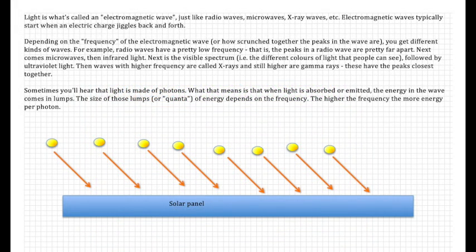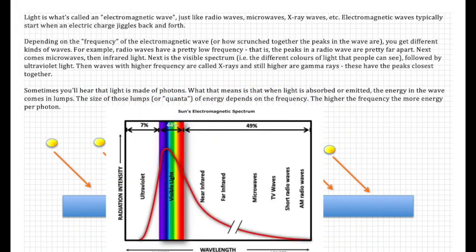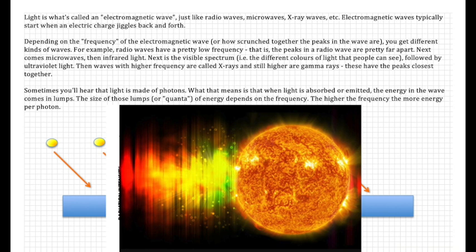Light is what is called an electromagnetic wave, just like radio waves, microwaves, x-ray waves. Electromagnetic waves typically start with an electromagnetic charge that jiggles back and forth.